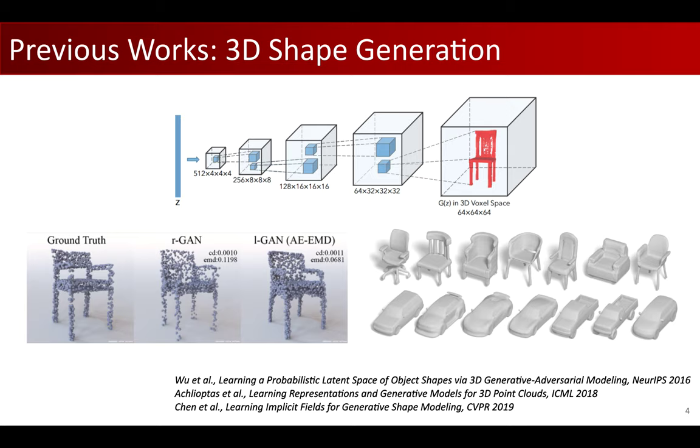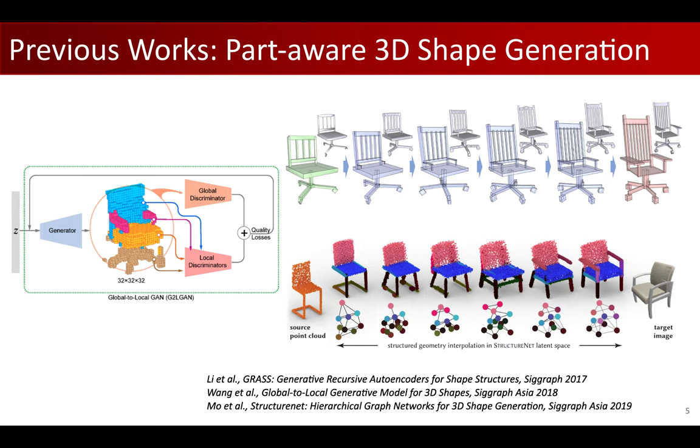It is a long-standing research topic on learning 3D shape generative models. Previous works mostly study how to generate 3D shapes in a holistic manner without explicitly considering the compositional shape parts and shape structures. Such networks usually have a hard time depicting the fine-grained part details and boundaries. Recently, researchers started to investigate how to model and generate 3D shapes with explicit parts and structures, which significantly improve the generation quality.